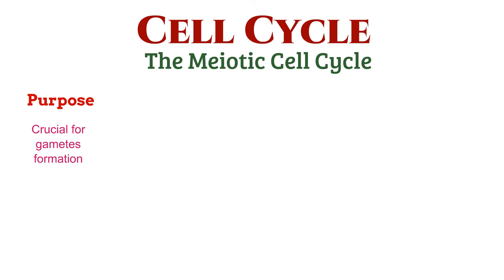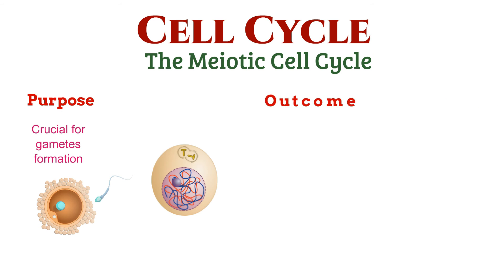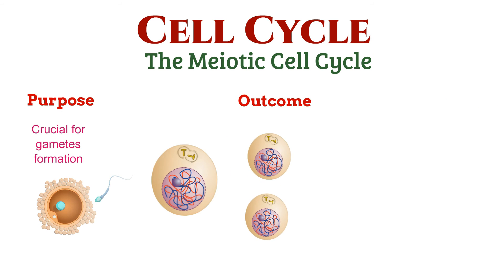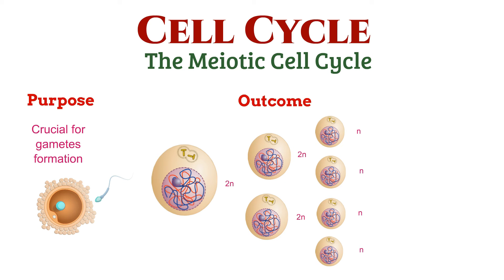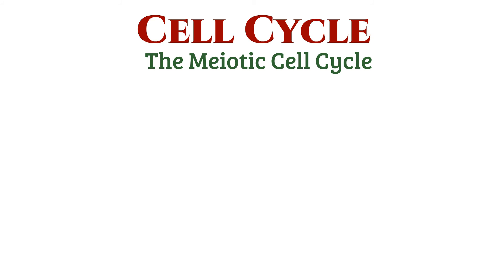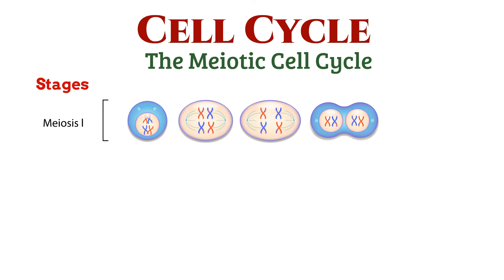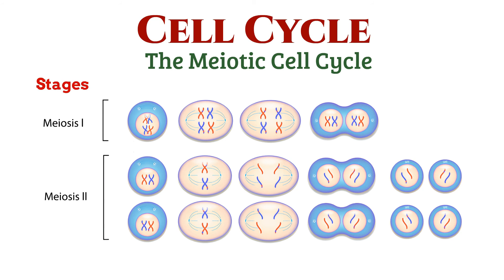The meiotic cell cycle is crucial for the formation of gametes in sexual reproduction. Unlike the mitotic cell cycle, the meiotic cell cycle results in the production of four non-identical daughter cells, each with half the number of chromosomes as the parent cell. This cycle involves two consecutive divisions, meiosis 1 and meiosis 2, each with distinct stages, including prophase, metaphase, anaphase, and telophase.